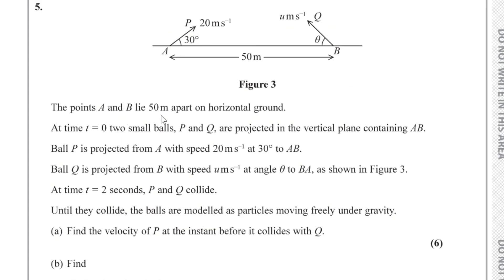Question 5. Points A and B lie 50 metres apart on horizontal ground. At time t equals 0, two small balls P and Q are projected in the vertical plane containing AB. Ball P is projected from A with speed 20 metres per second at 30 degrees to AB. Ball Q is projected from B with speed U metres per second at angle theta to BA. At time t equals 2 seconds, P and Q collide. The balls are modelled as particles moving freely under gravity.